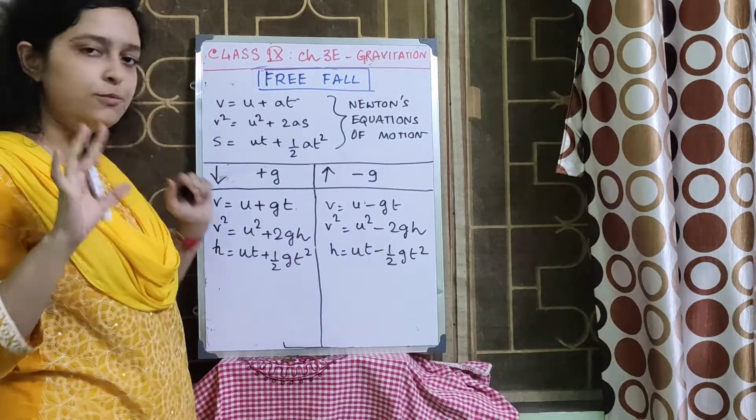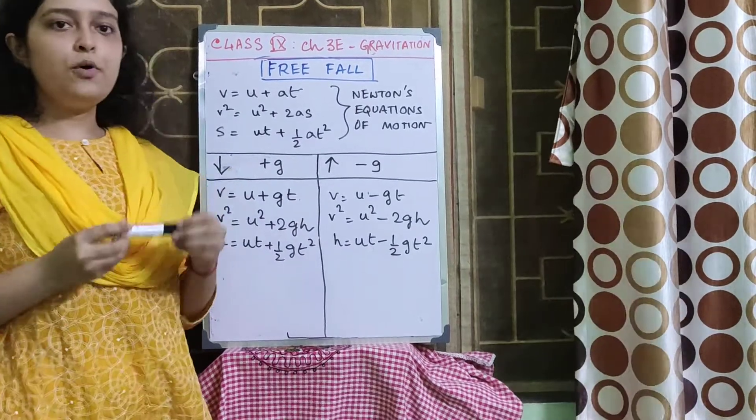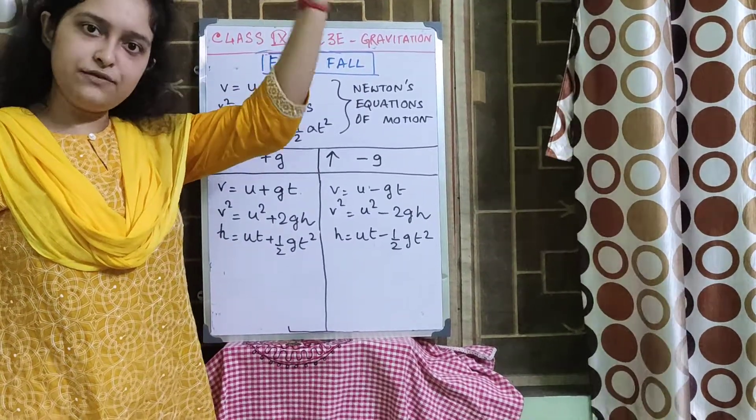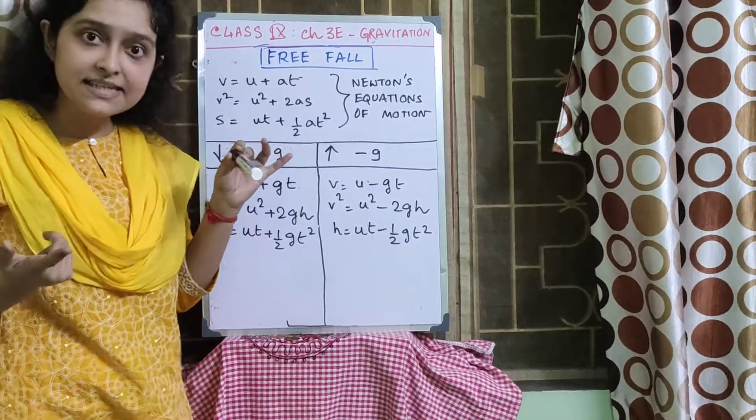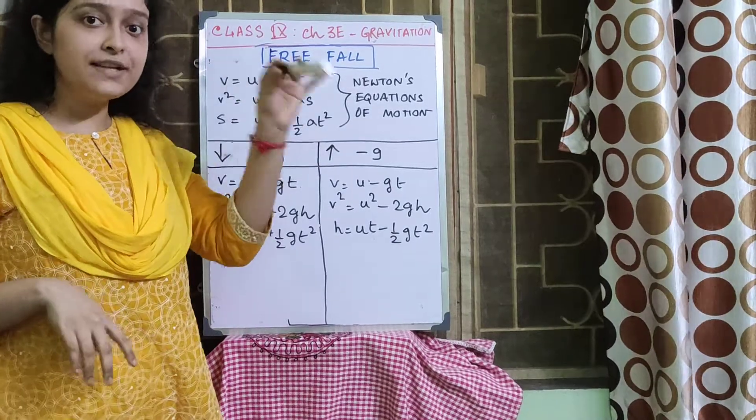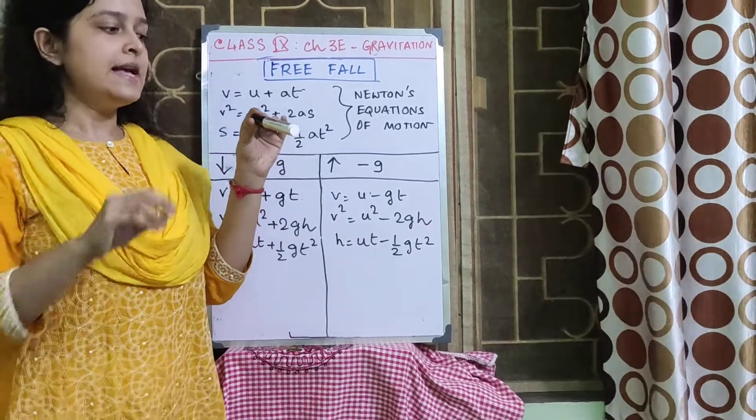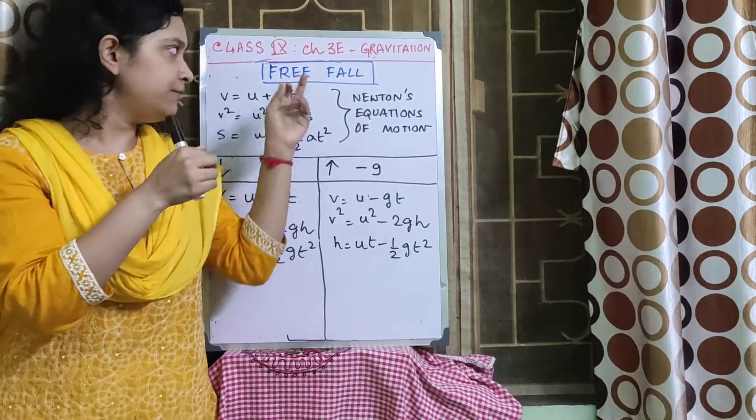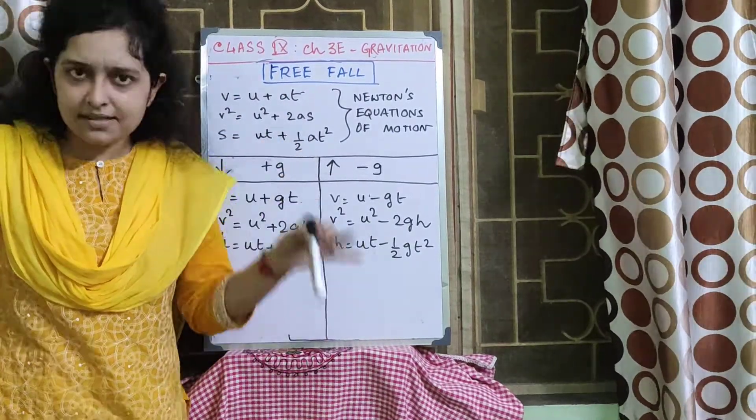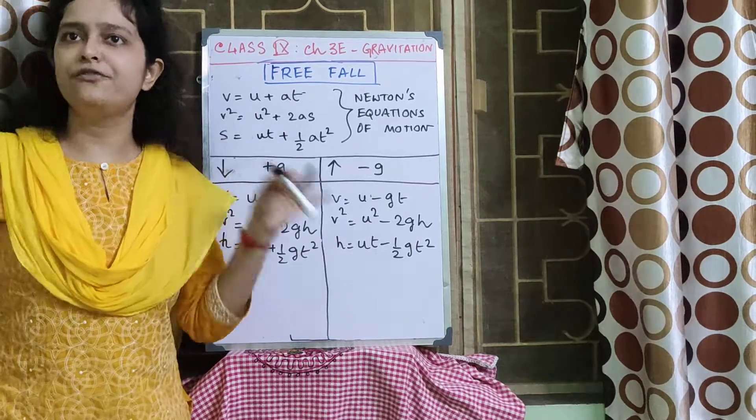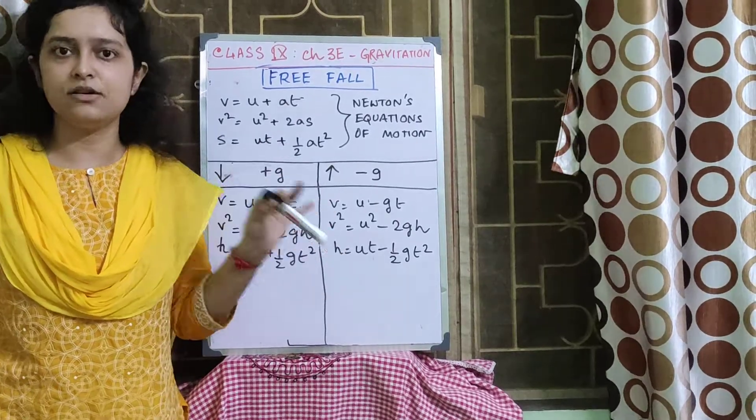We have another equation relating distance: S is equal to UT plus half AT square. So displacement S is equal to UT plus half AT square. These 3 equations of motion we have already done. Now suppose if I release a marker, it will fall under no other force except for the force of gravity acting on it for which the acceleration produced will be g.